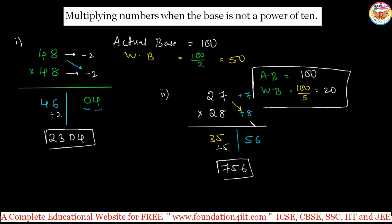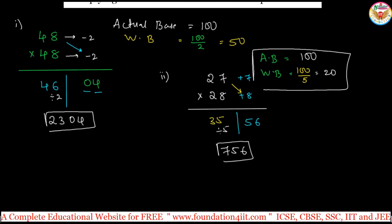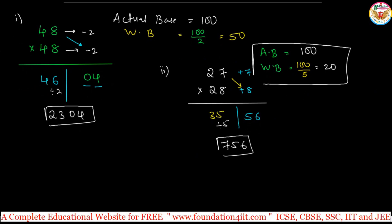This cross way you can subtract. To show you more clearly, let me show one more example. Question is 55 into 45. Instead of taking 100 as the base, actual base is 100. Keep this all in mind, what to do. And working base on this is 50, both are close to 50.